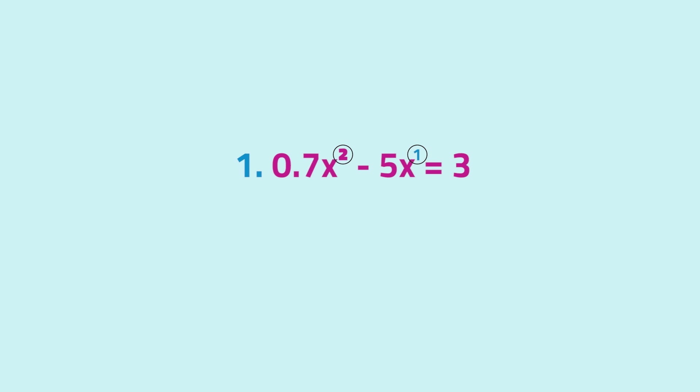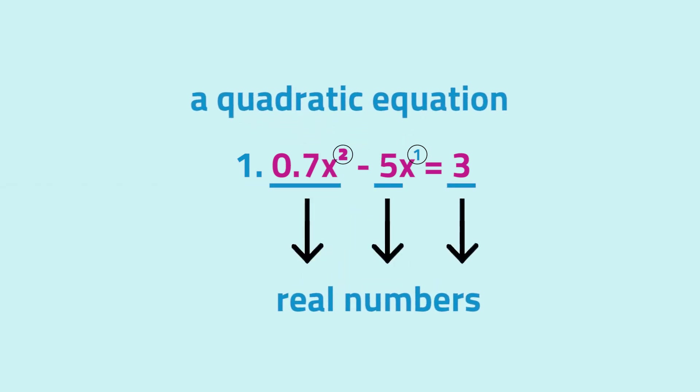Since the highest exponent is 2, and the coefficients and the constant are all real numbers, then we call this a quadratic equation, albeit not in standard form.